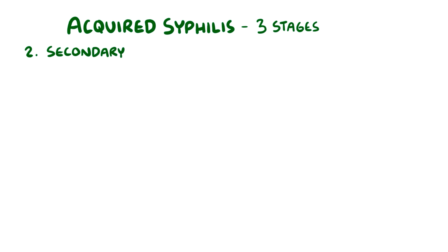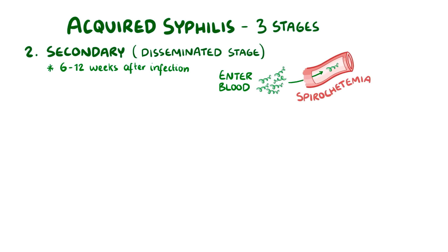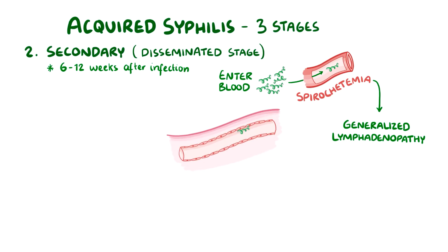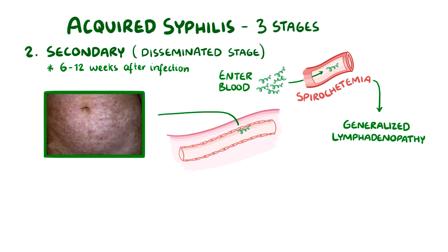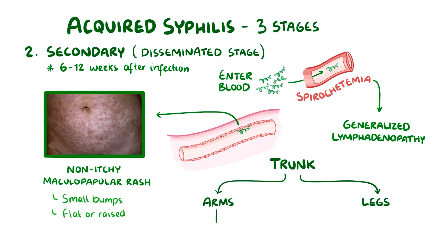The second stage is secondary syphilis, or the dissemination stage, and it occurs about 6 to 12 weeks after the infection. During this stage, spirochetes enter the bloodstream, which is called spirochetemia, and this causes generalized lymphadenopathy, meaning spirochetes can be found in lymph nodes throughout the body. The spirochetes like to attach to and infect endothelial cells in small capillaries near the skin, causing a non-itchy maculopapular rash — small bumps that are either flat or raised. The rash starts on the trunk and spreads out to the arms and legs, and eventually to the palms, soles, genitalia, and other mucous membranes.